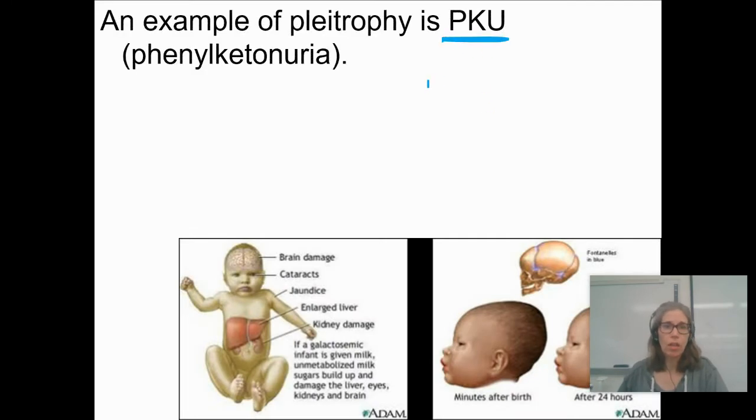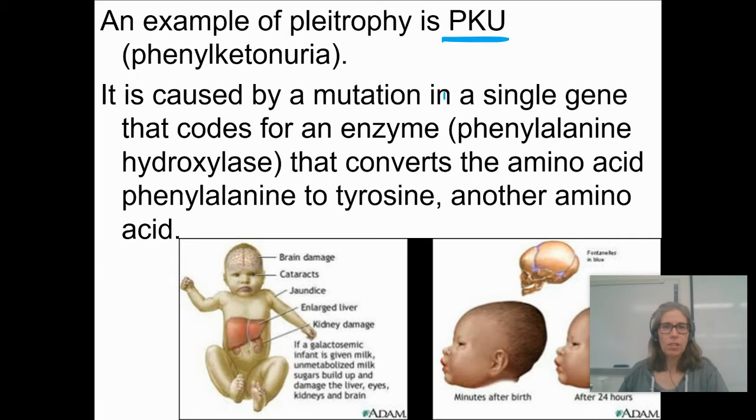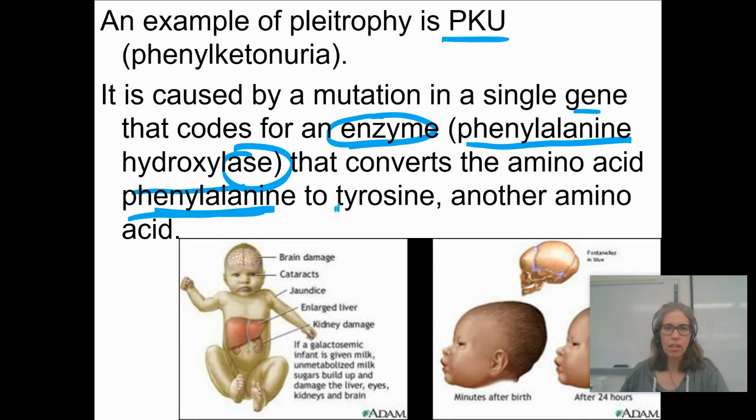An example is PKU, phenylketonuria. It's caused by a mutation in a single gene that codes for an enzyme. DNA codes for RNA codes for protein. That protein might be an enzyme. The enzyme in this case is phenylalanine hydroxylase. It's an enzyme that converts a particular amino acid, phenylalanine, to tyrosine.